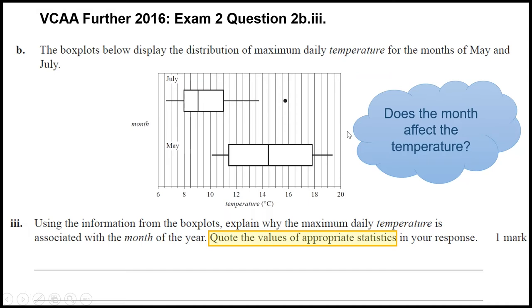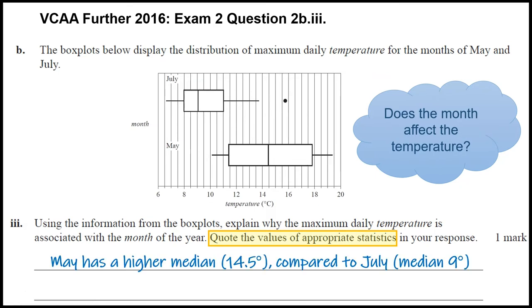We can see that it does, because it tends to be a lot hotter in May. The box plot in May is a lot further to the right, meaning it's hotter. The appropriate statistics that we're going to quote is going to be the median, the measure of center, which we can see from the box plot. So something like: May has a higher median—we need to quote it, reading off from the box plot it's about 14.5 degrees compared to July.